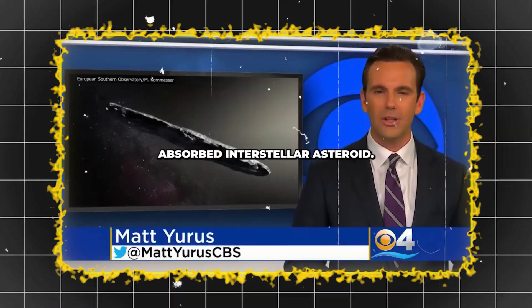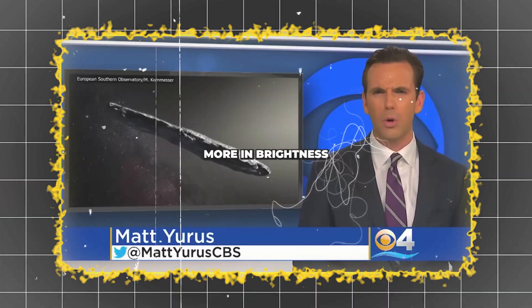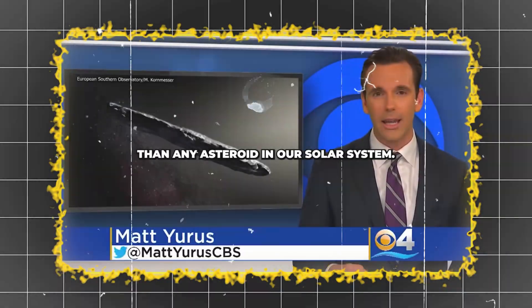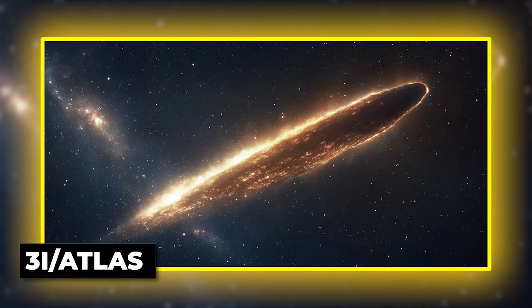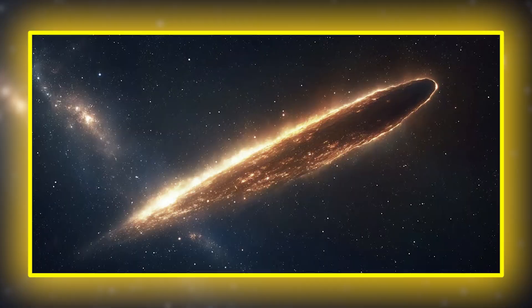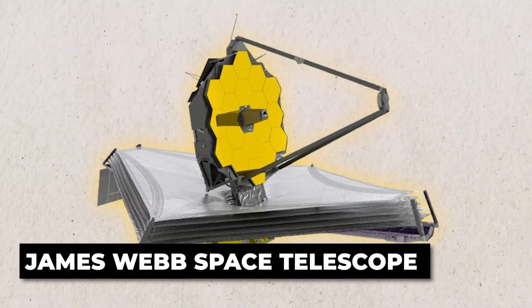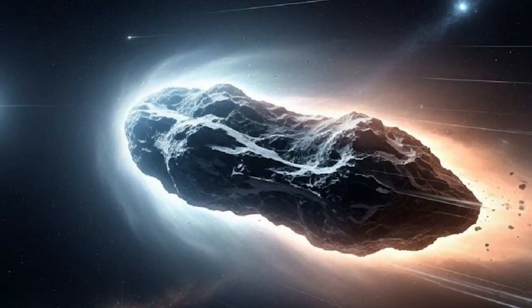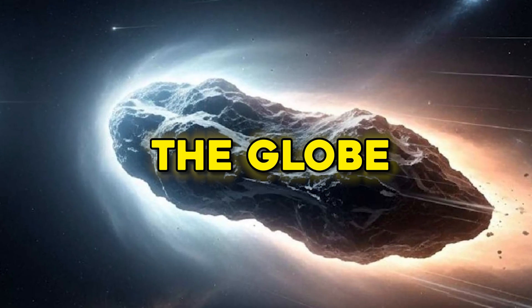Oumuamua is the first observed interstellar asteroid. It's longer and varies more in brightness than any asteroid in our solar system. The first confirmed image of 3I-Atlas, captured by the James Webb Space Telescope and revealed by Elon Musk, has electrified the scientific community and stirred immense curiosity across the globe.